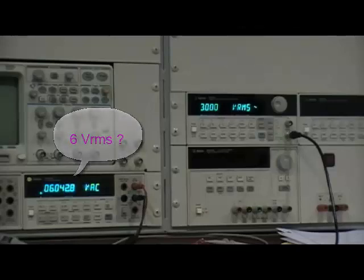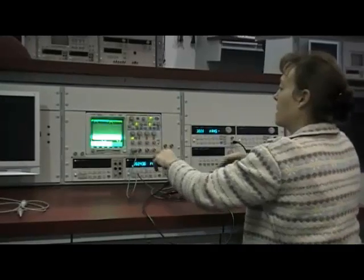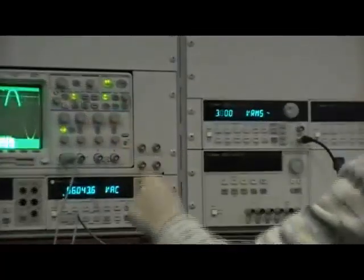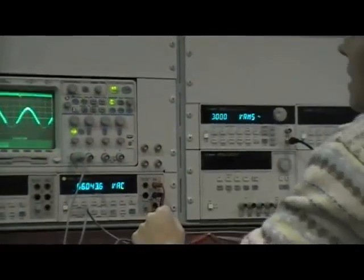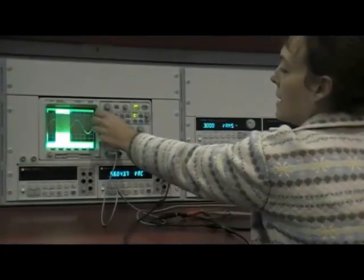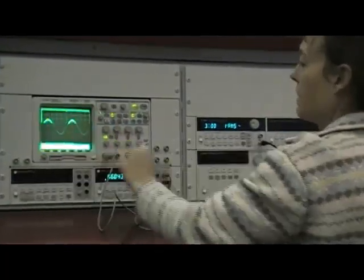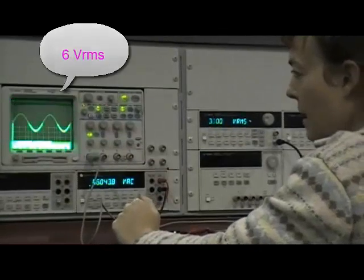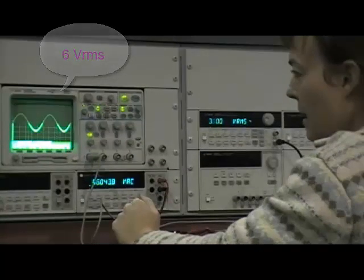let's go ahead and connect the scope also. We'll connect the scope in parallel with the function generator and the DMM. When you measure the RMS value of the waveform, we see that the RMS value as measured by the scope agrees with the DMM, which is 6 volts RMS.